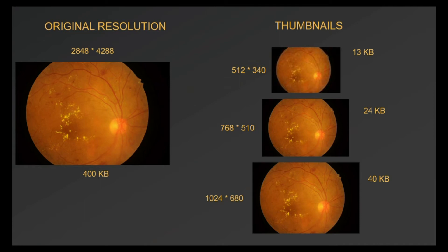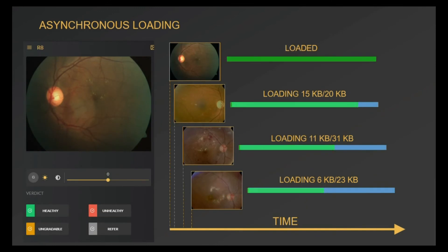The issues mentioned earlier were resolved as follows. For faster image loading, we resize images into smaller-size thumbnails with a smaller memory footprint while still maintaining visual quality. We also leverage the asynchronous capabilities of the browser and preemptively load not just one but three images, so the grader does not need to wait for the next image to load.